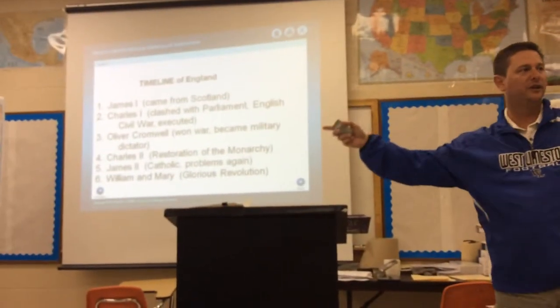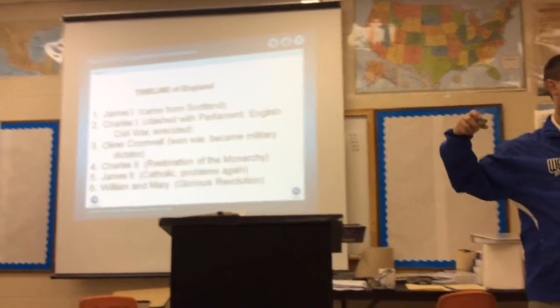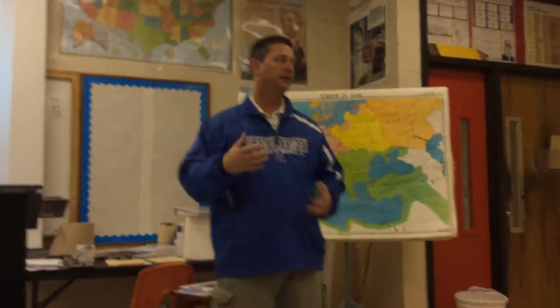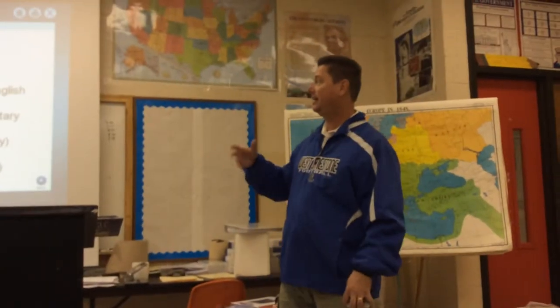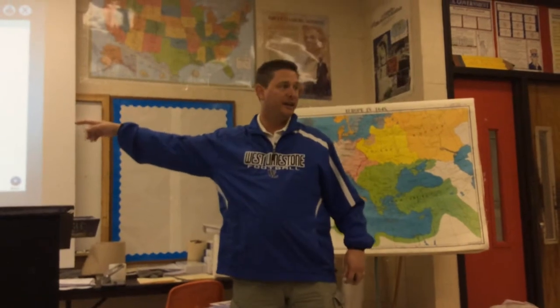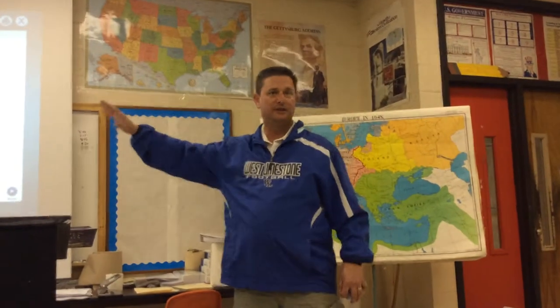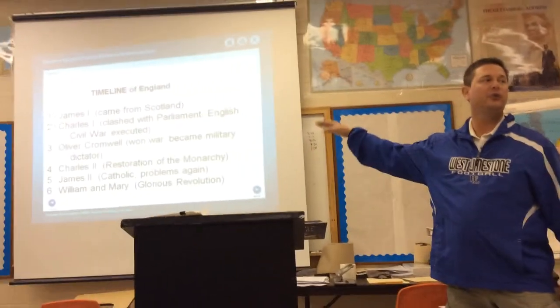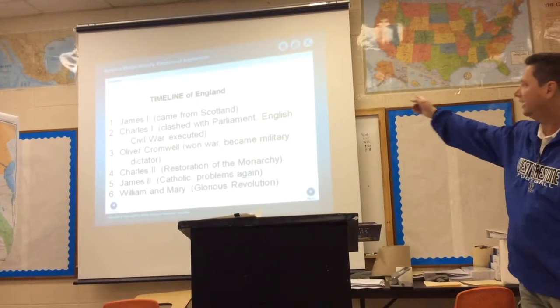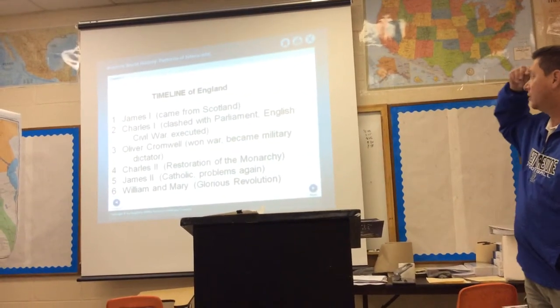A man named Oliver Cromwell took over. He was the rebel leader and a military dictator — he was really bad. He didn't get executed; he just died. After he died, the people in England said, 'We need a king again — let's go get Charles II.' That was called the Restoration. Circle the word Restoration. Circle the words English Civil War.